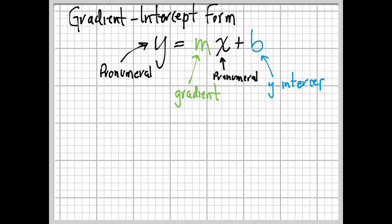The b on the end is the y-intercept. You can see why this is called gradient intercept form. It just comes down to the pronumerals, the gradient, and the y-intercept.